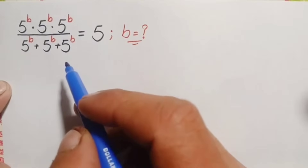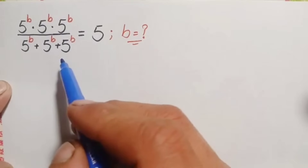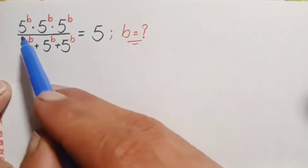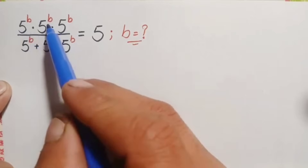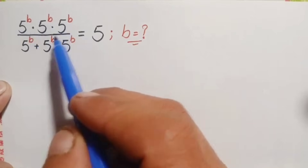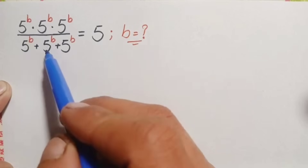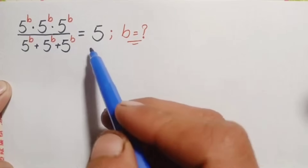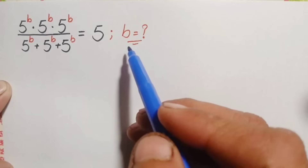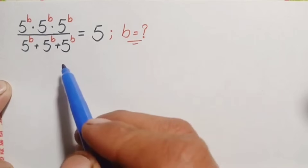Hello everyone, you are welcome. How to solve this beautiful exponential math problem: 5 raised to power b times 5 raised to power b times 5 raised to power b, divided by 5 raised to power b plus 5 raised to power b plus 5 raised to power b, is equal to b. Here we will try to find out the value of b.